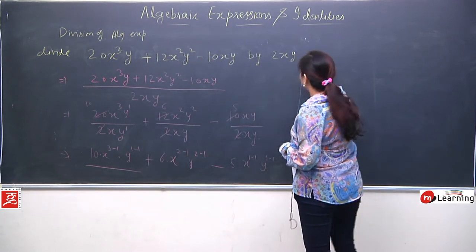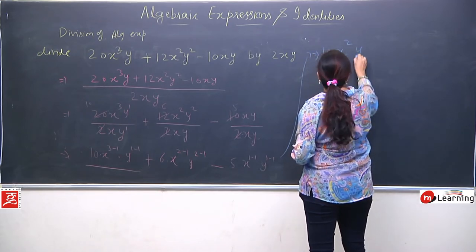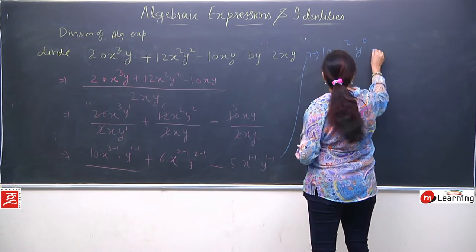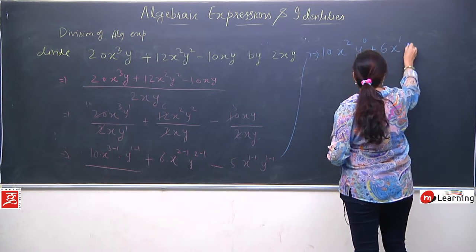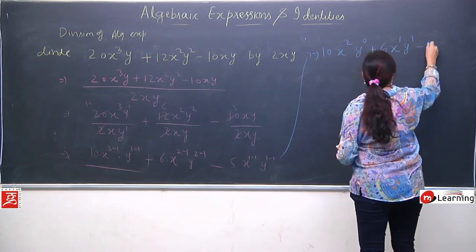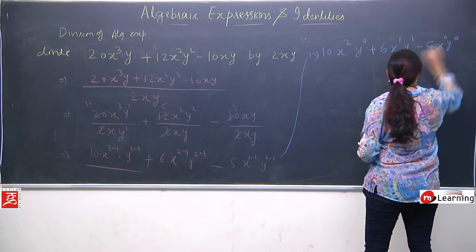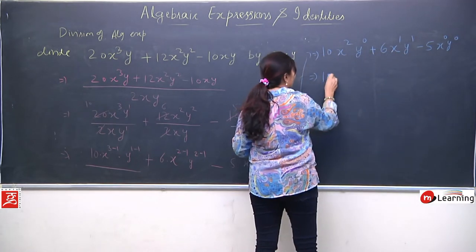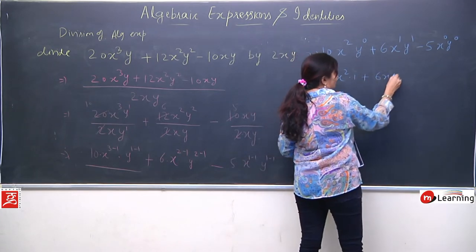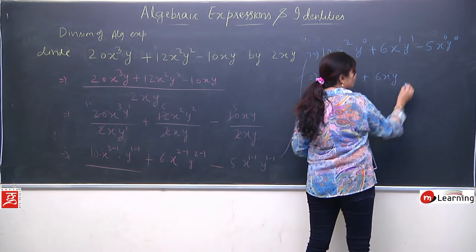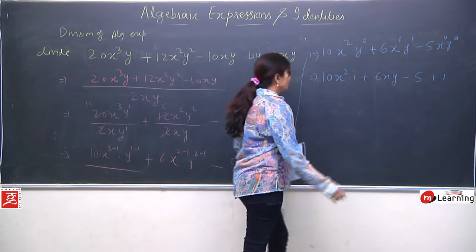Next step: 10x to the power 3 minus 1 means x to the power 2, y to the power 0. First term solve ho gayi. Second term: 6, x to the power 2 minus 1 is 1, similarly y ki bhi power 1. Minus 5: x to the power 0, y to the power 0. Final result: 10x², plus 6xy, minus 5 — because kisi ki bhi power 0 ho to woh 1 hota hai, and power 1 ko hum likhte nahi hain. Poora simplify ho gaya.